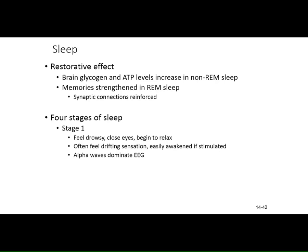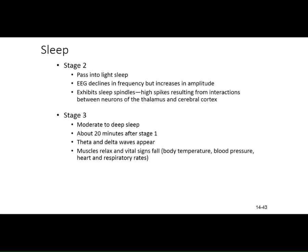There are four stages of sleep — you've probably seen this in psychology. Stage one: feeling drowsy, eyes beginning to close, relaxing, drifting off. During this first phase, you'd see alpha waves as the dominant wave in an EEG. Then stage two: we pass into a lighter sleep. The EEG declines in frequency but the amplitude increases, and there will be spindles — big spikes — in the EEG. Those big spikes represent the connection between the thalamus and the cortex.